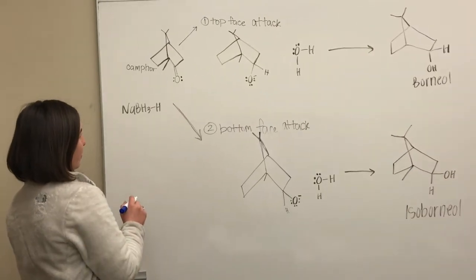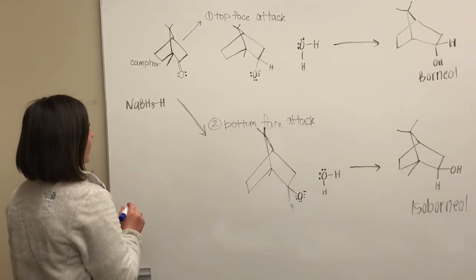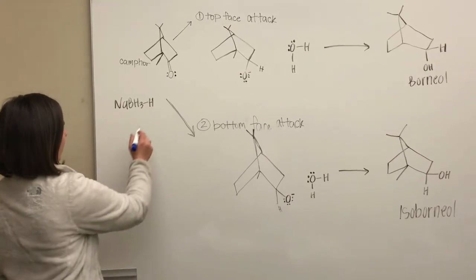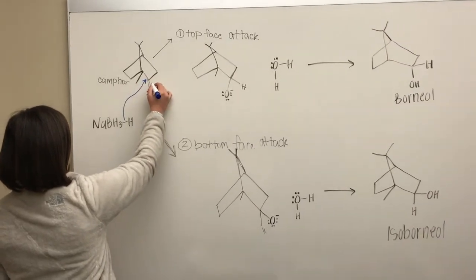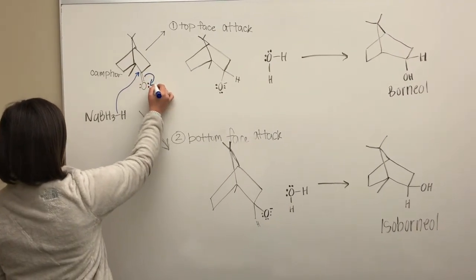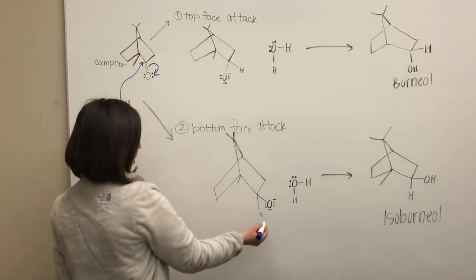Since the carbonyl group of camphor is planar, sodium borohydride can also attack this carbon from the bottom and then these electrons will be pushed to oxygen creating our O- again.